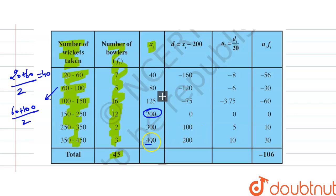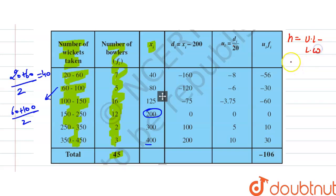Now we find ui = di divided by h. Here h is the class width: 60 minus 20 equals 40. So ui = di divided by 40, not 20. These values are now corrected accordingly.